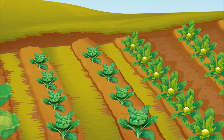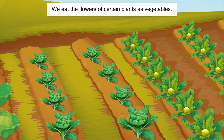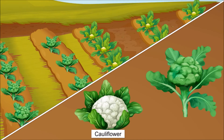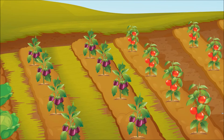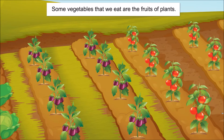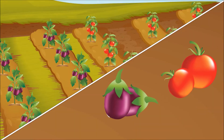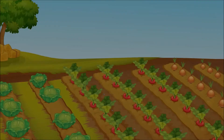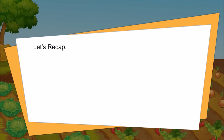We also eat the leaves of certain plants as vegetables, for example cabbage and spinach. In some cases we eat the flowers of plants as vegetables, like cauliflower and broccoli. In some other cases, the vegetables that we eat are the fruits of plants, for example tomato and brinjel.